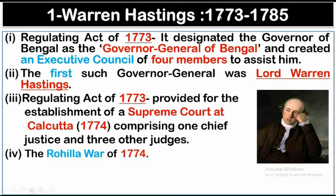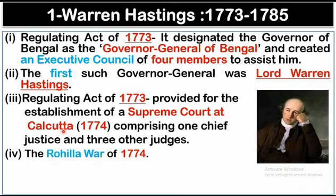The first Governor-General was Warren Hastings, whose tenure was from 1773 to 1785. The Regulating Act of 1773 was passed during his tenure. It designated the Governor of Bengal, also known as Governor of Fort William, to the Governor-General of Bengal, and provided an executive council of four members to assist the Governor-General. The Regulating Act also provided for the establishment of the Supreme Court at Kolkata, established in 1774, comprising one Chief Justice and three other judges.